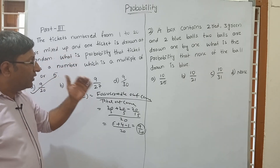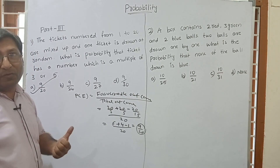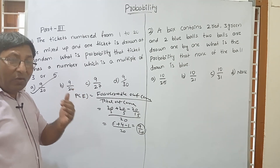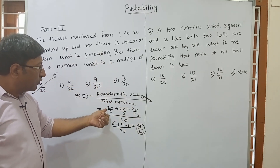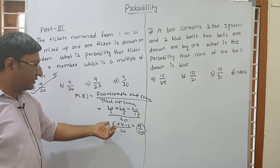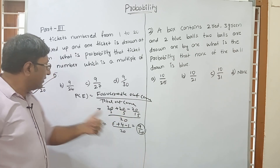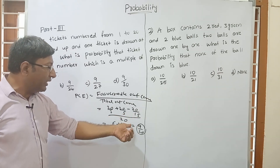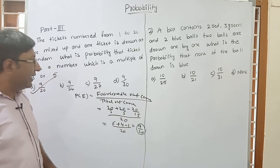To recap: tickets numbered 1 to 20, one ticket drawn at random. Probability it is a multiple of 3 or 5. Find numbers divisible by 3: 20 by 3 gives 6. Numbers divisible by 5: 20 by 5 gives 4. Subtract numbers divisible by both (divisible by 15): only 1. So 6 plus 4 minus 1 equals 9. Answer: 9 by 20.